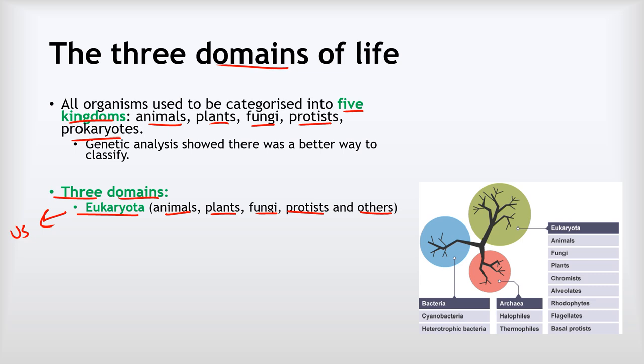All the things in the Eukaryota domain, all the organisms there, have cells that have a nucleus. Also, their DNA contains unused sections. If you look at the human genome, there are huge stretches that don't seem to have any particular purpose. They're not actually genes, they're not coding for different proteins, they're just there. That's a feature of the DNA in organisms from the Eukaryota domain.